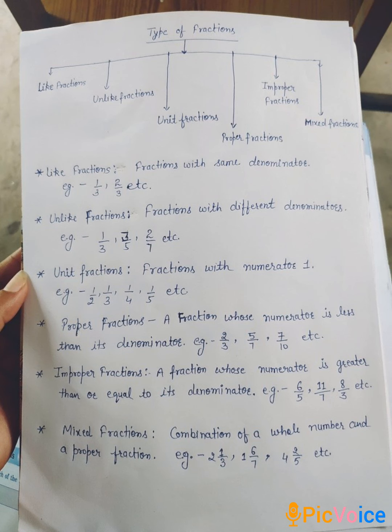Third, unit fraction. Fraction with numerator one. Numerator is upper part of the fraction. For example, one by three, one by four, one by five.